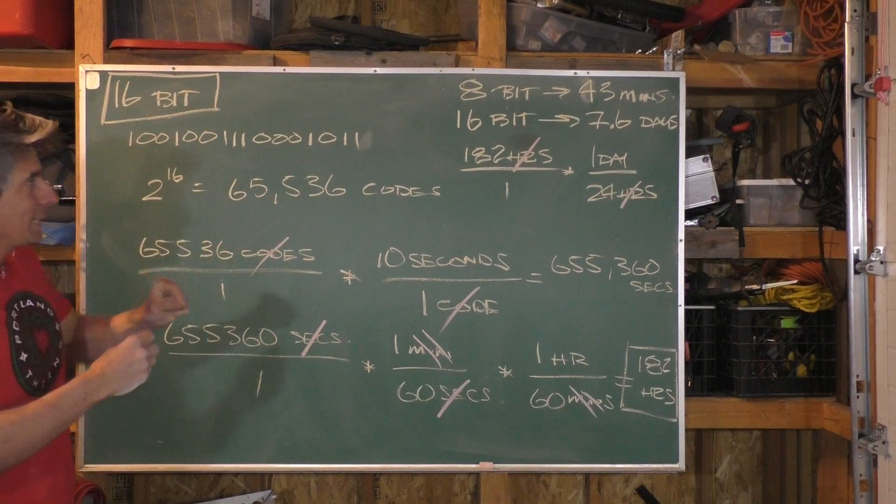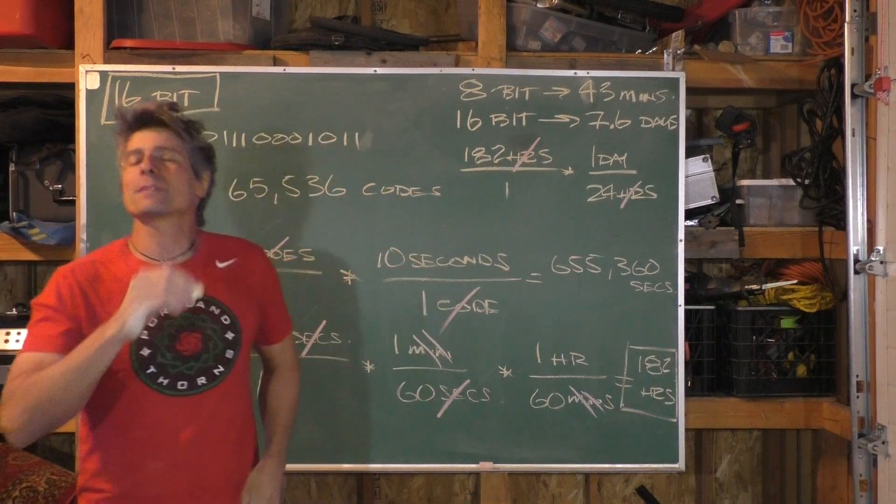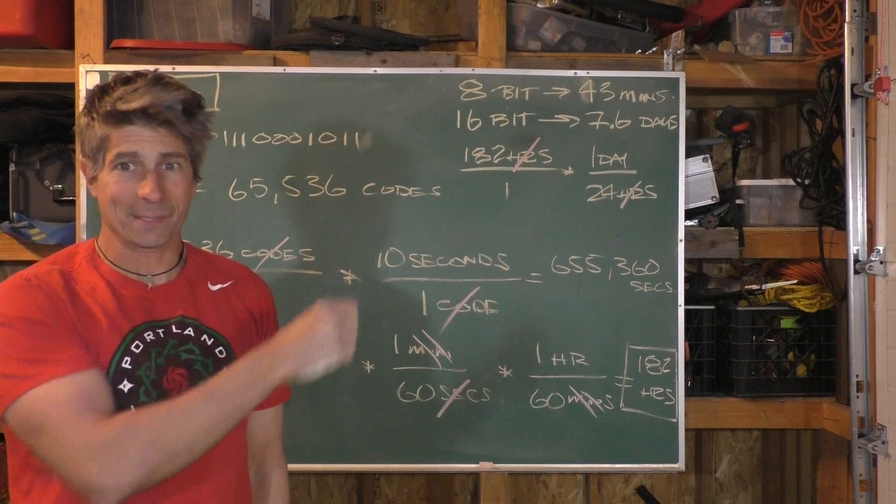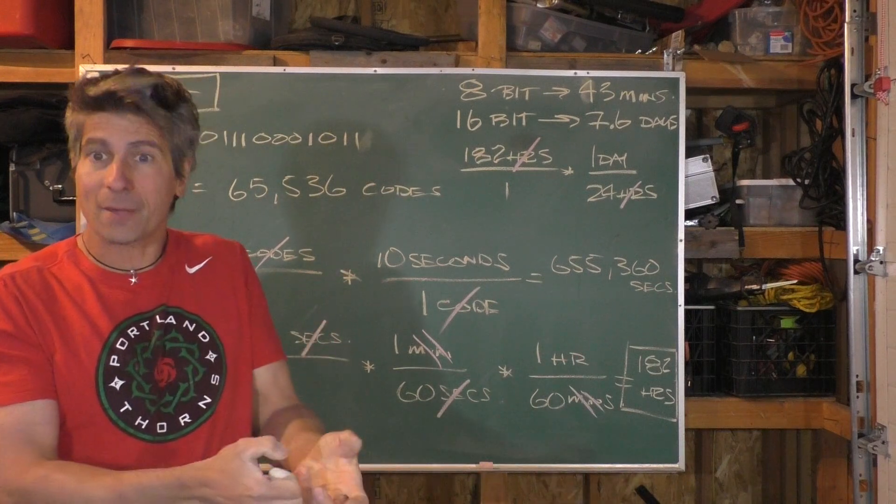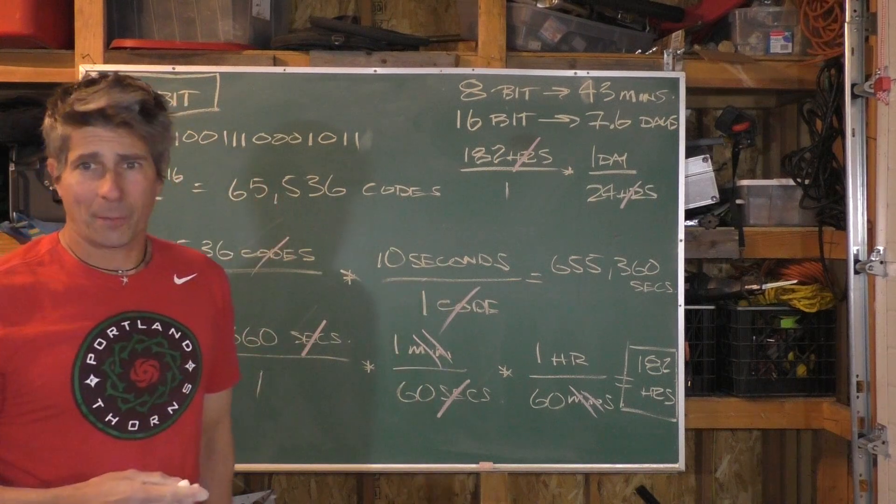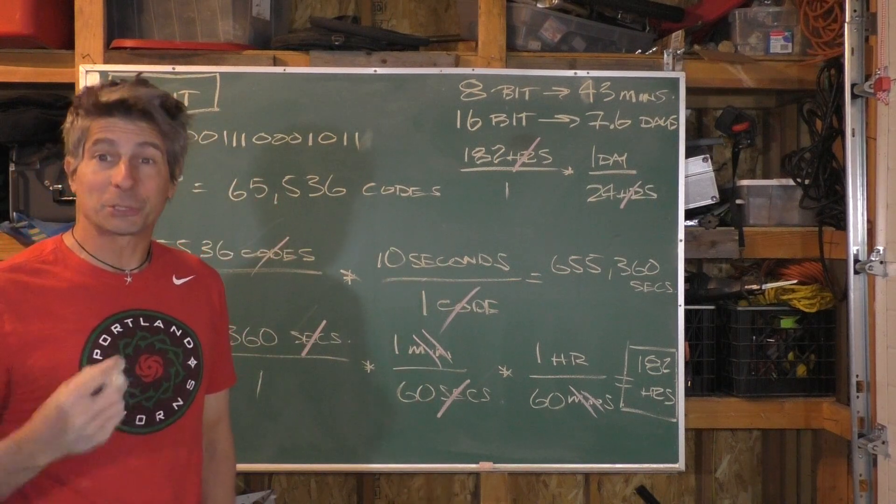But still, that is not long enough because 7.6 days is a long time, that's me working around the clock 7.6 days, typing every 10 seconds. Supercomputers can work around the clock, but again, they are super, super fast.